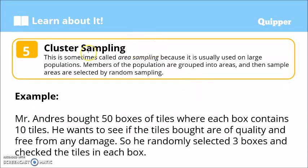Next sampling technique is cluster sampling. This is sometimes called area sampling because it is usually used on large populations. Members of the populations are grouped into areas. And then, sample areas are selected by random sampling. Example: Mr. Andres bought 50 boxes of tiles where each box contains 10 tiles. He wants to see if the tiles bought are of quality and free from any damage. So he randomly selected 3 boxes and checked the tiles in each box. This is an example of cluster sampling.